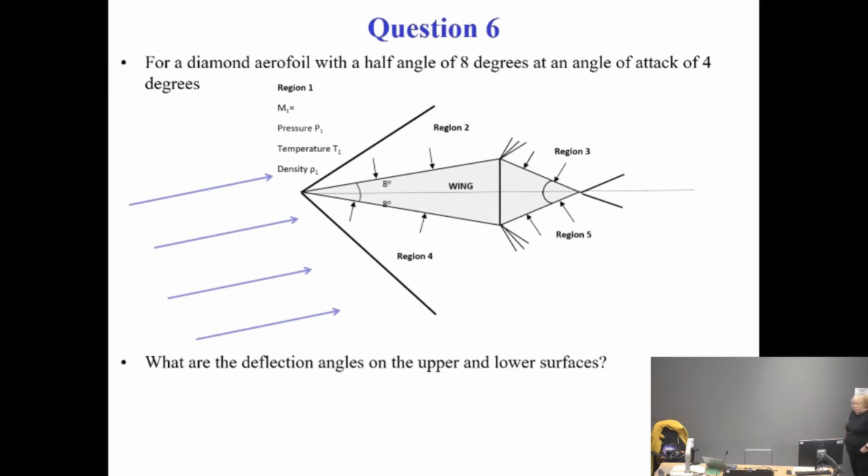A quick recap. Diamond aerofoil, half angle 8 degrees, angle of attack 4 degrees. Each of those parts there is 8 degrees and 8 degrees, so it's actually 16 subtended at the nose, half up, half down. However, it's not a 0 degree case, it's a 4 degree angle of attack. Question, what's the deflection angle theta on the upper and lower surfaces? 4 and 12. Absolutely right.